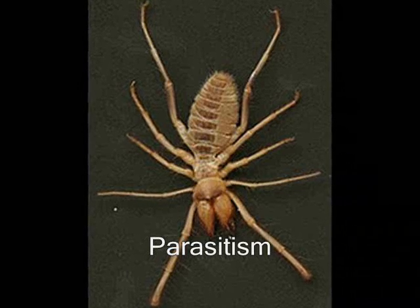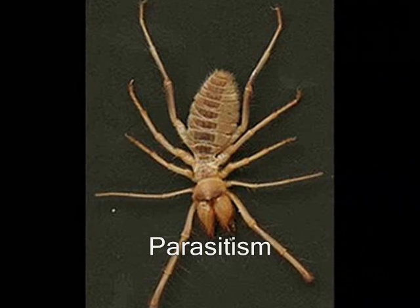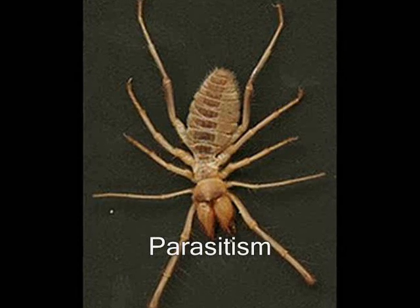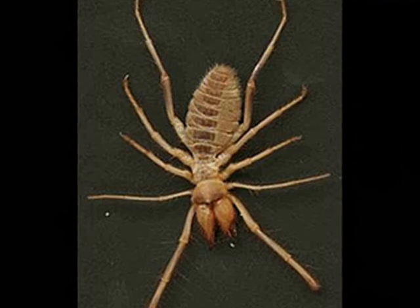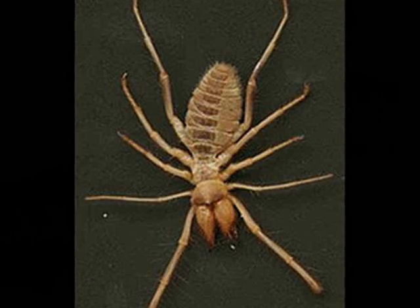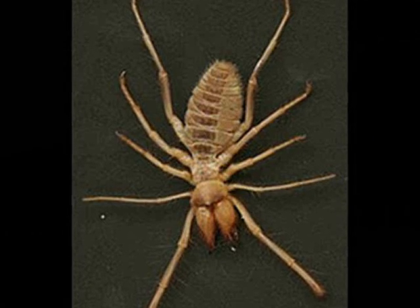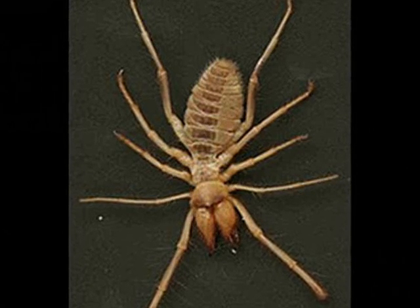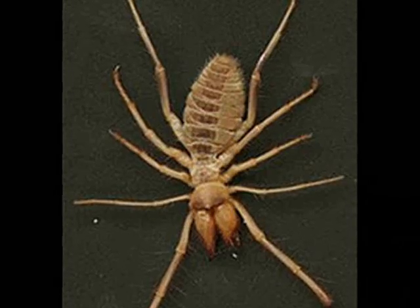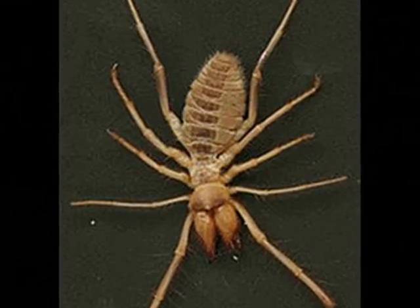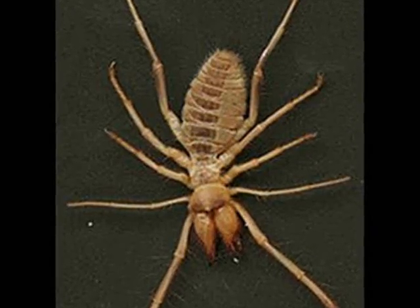Parasitism is when two organisms interact and one gets harmed. An example of parasitism is the camel spider. The camel spider burrows into the camel, lays its eggs, and when they hatch, they eat their way out, which kills the camel.